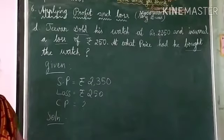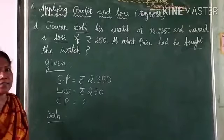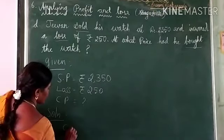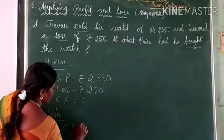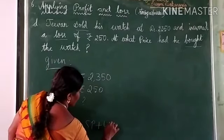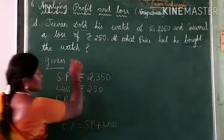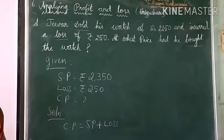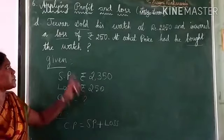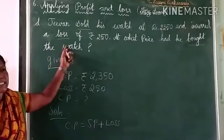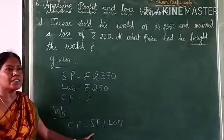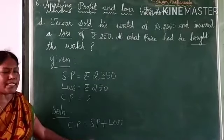What is the formula for cost price? Tell me anyone. Cost price is equal to selling price plus loss. If profit was given, we subtract from selling price. But here, we add the loss to the selling price. Are we clear?